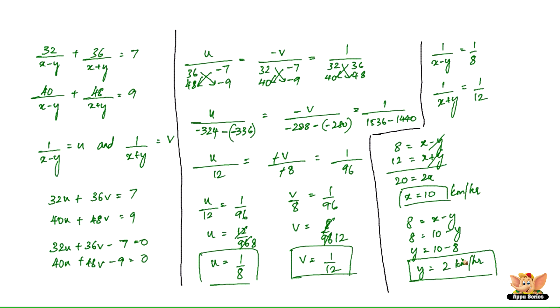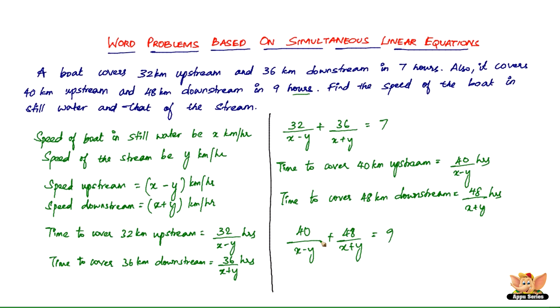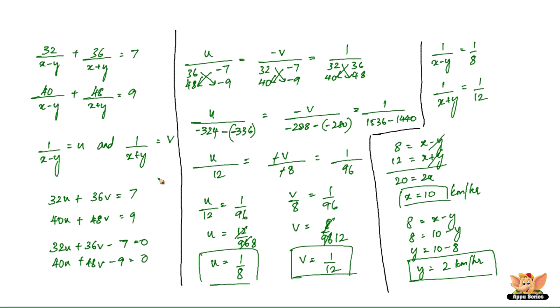So the speed of the boat in still water is 10 kilometers per hour, and the speed of the stream is 2 kilometers per hour. That 2 kilometers per hour difference affects how long you take to travel upstream versus downstream. The problem ended conceptually once we found those two equations; after that it was using the reducible form method of simultaneous linear equations to find u and v, then back-substituting to get x and y. This concludes the problem and this video.